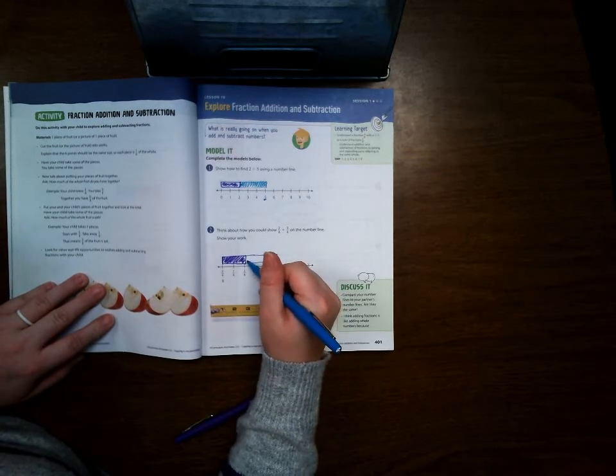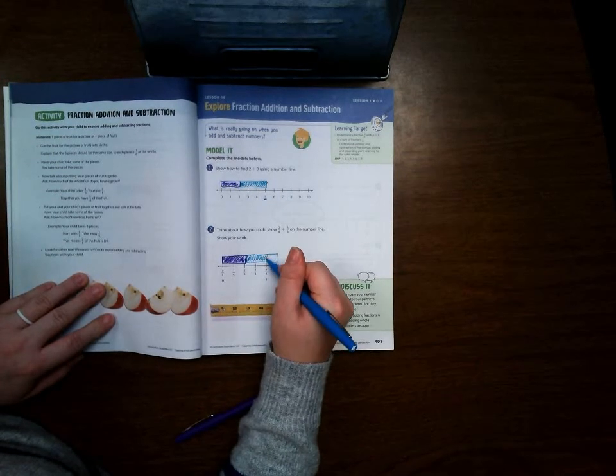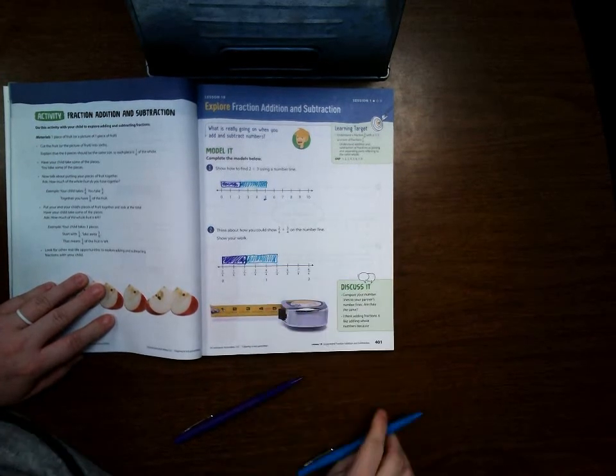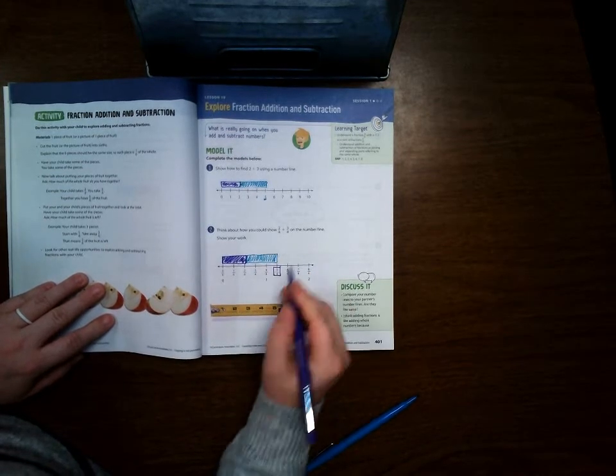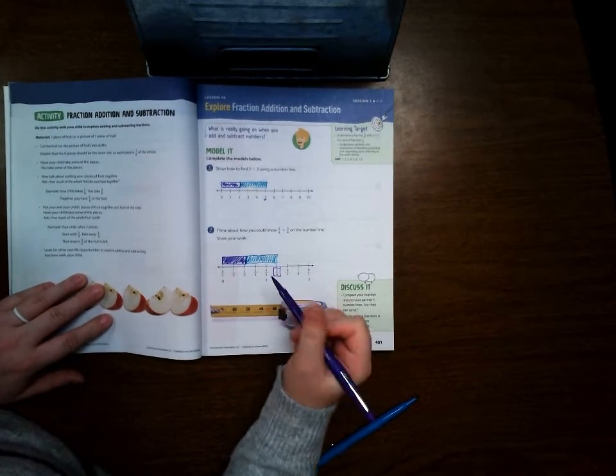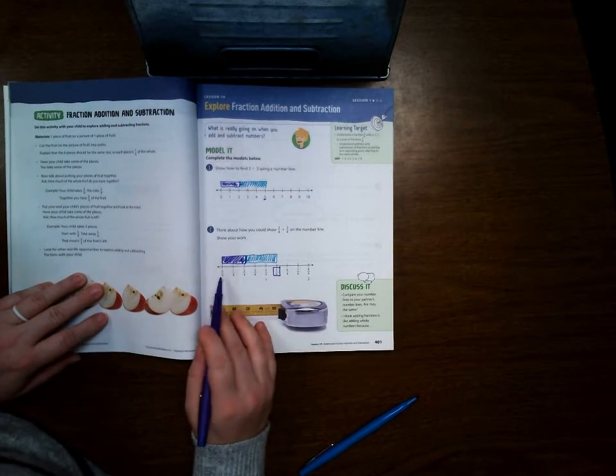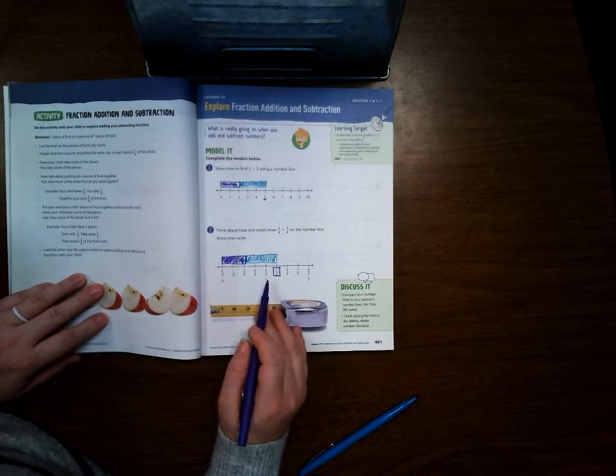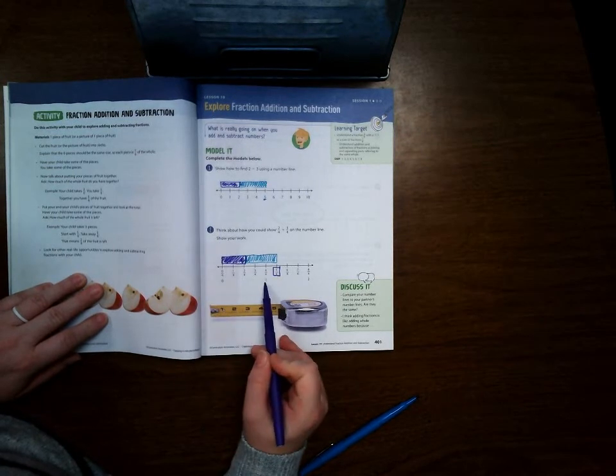So in this case we finish with 5/4. But as you can see, the top number is 5, just like we got up here. The difference is that we have fourths on the bottom because we did it in fourths. So whereas this is a whole number here, our whole number is actually right here on this one.